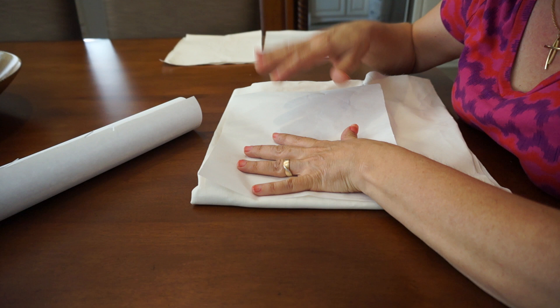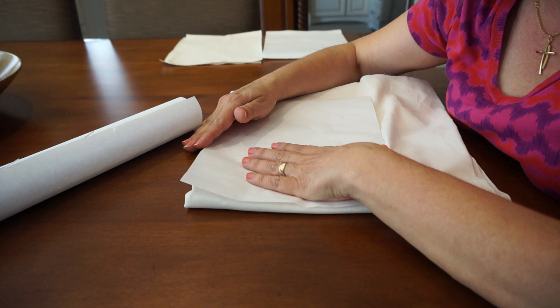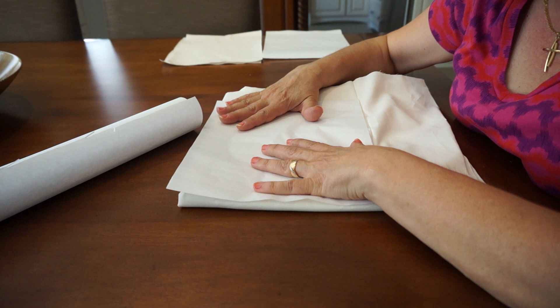You want to make sure that the paper covers all the edges. Have it overlap a little bit so that there's no fabric sticking out from the sides. You want to cover all the edges with your paper in an eight and a half by eleven sheet size.